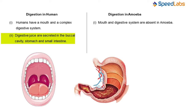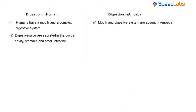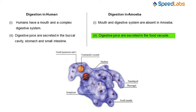Secondly, digestive juices are secreted in the buccal cavity, stomach, and small intestine in humans. Different types of digestive juices are secreted at different places so that different substances can be digested — for example, in the buccal cavity, stomach, and small intestine. But in amoeba, there is a food vacuole, so digestive juices are secreted in their food vacuole.